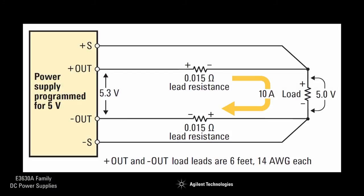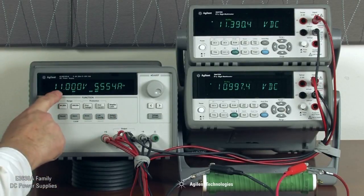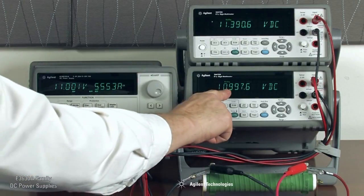The sense inputs are used to compensate for voltage drops due to wiring and fixturing, ensuring that the voltage at the load is what you set at the power supply. With the supply set to 11.00 volts, the output at the load measures 10.99 volts as it should.